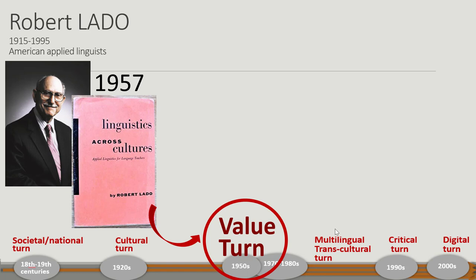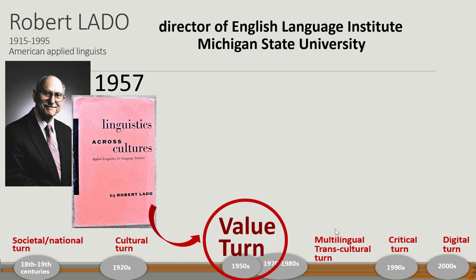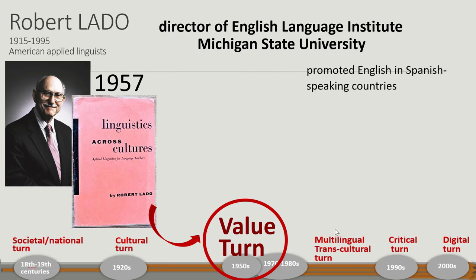We can consider 1957 as the beginning of the value term in second language education. At that time, Robert Lado was director of the English Language Institute of Michigan State University. The mission of the institute was to promote English in Spanish-speaking countries, and the mission was partly political.